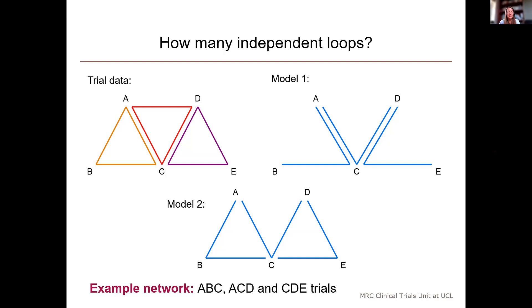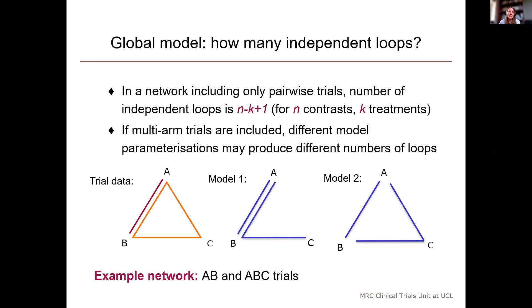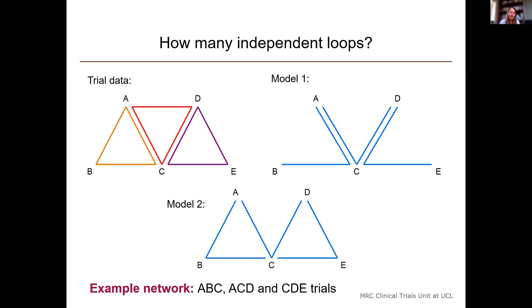Both of these examples show that if multi-arm trials are included in the network, different model parameterizations may produce different numbers of loops, and we have to make a decision about how many loops to include. So, to think more about this, I'd like to ask you a question again and run another poll shortly. So, if you were to fit a model to this example or the example before, and you could make a choice about whether to minimize the number of loops in the model or maximize the number of loops in the model, I'd like to ask which of those you prefer, minimizing or maximizing.